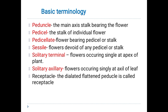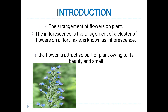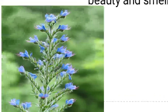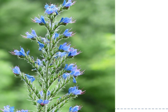If you see this diagram clearly, you will understand. This is the structure — this is the peduncle, which contains different flowers around it. The individual stalk of each flower is called the pedicel. In the diagram, the red part shows the peduncle and the yellow part shows the pedicel.